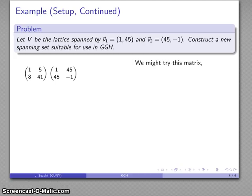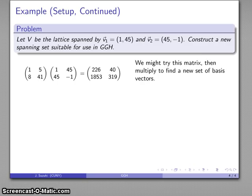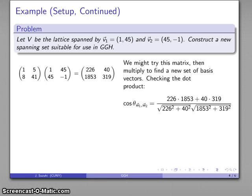Here's a matrix with determinant one, and I can multiply them together to form a new set of basis vectors. Again, the rows of my original matrix are the private basis. The rows of the new matrix are going to be the public basis, and we want to make sure that our public basis vectors are very nearly parallel.